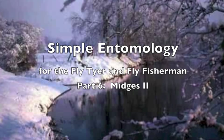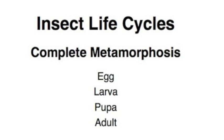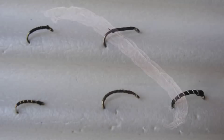Welcome back to Simple Entomology for the Fly Tier and Fly Fisherman, Part 6. I'm Raj Kletke, and in this video we'll be finishing up on midges. When broadly defined, midges are very diverse with literally thousands of species, some of which may be locally important. However, to keep this simple, we will concentrate on the common midges we fly fish with. In the previous video, we looked at the life cycle of midges and looked at the larvae and flies we might tie to fish larvae.